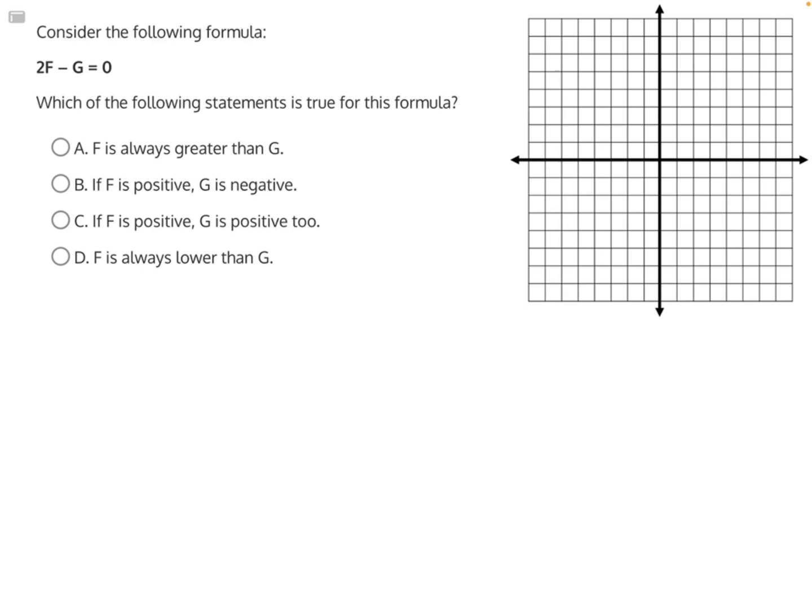To solve this question, we're going to need to graph it. And to graph it, we need to label our axes in terms of F and G. Normally, our x-axis is our cause, while our y-axis is our effect. So if we look at our answer choices to see which variable is affecting the other, it seems to be F.